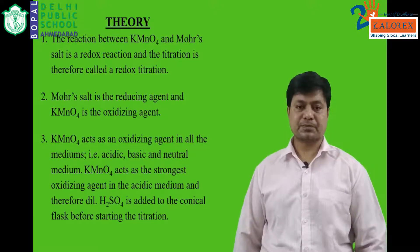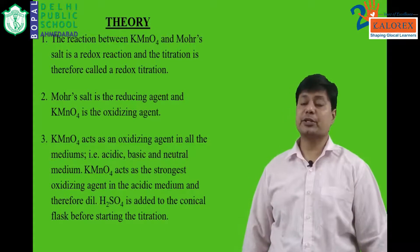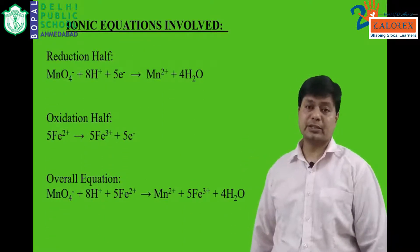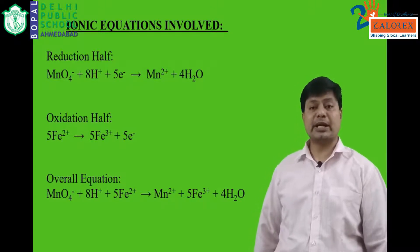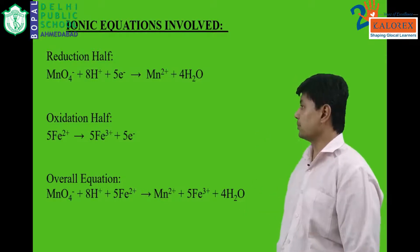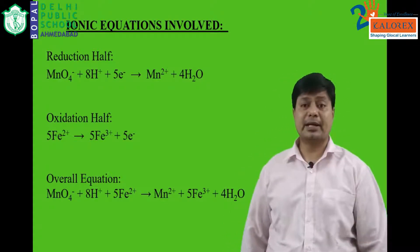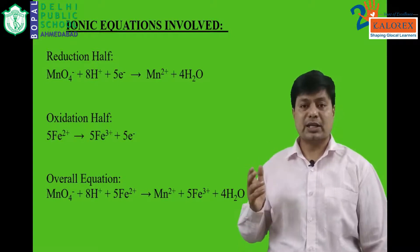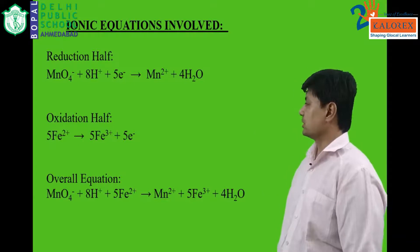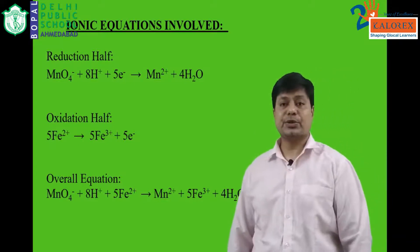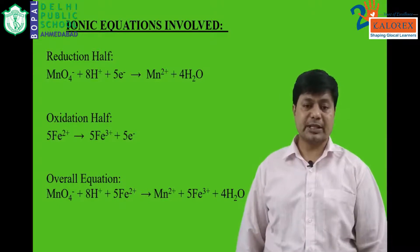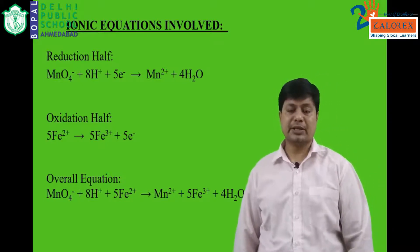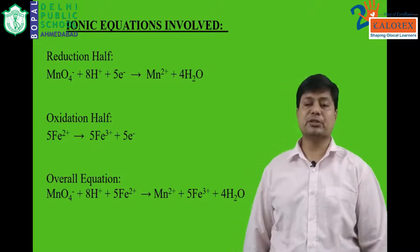Let us see the ionic equations going into the reactions. If you see the reduction half, you will find that MnO4 minus reacts with H plus ions with an exchange of five electrons to give you Mn plus two ions. That means here MnO4, where Mn has plus seven oxidation state, reduces to Mn plus two. In the oxidation half, if you see the reaction, Fe plus two ions, that is ferrous ions, reacts to give ferric ion. Overall, if you see, the reaction goes like MnO4 minus plus eight hydrogen ions plus five ferrous ion gives Mn plus two plus five ferric ions plus four water molecules.